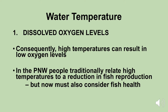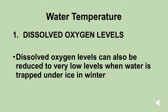In the Pacific Northwest, people traditionally relate high temperatures to a reduction in fish production, but we also have to consider fish health. Higher temperatures mean less oxygen, making it more difficult for fish to breathe and carry out normal processes. Dissolved oxygen levels can also be reduced to very low levels when water is trapped under ice in winter — there's very little introduction of oxygen from the atmosphere, which negatively affects aquatic organisms. The warmer the water, the less dissolved oxygen it generally holds.